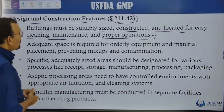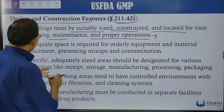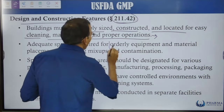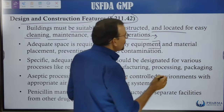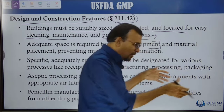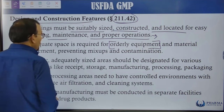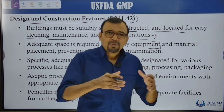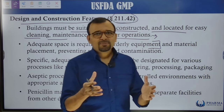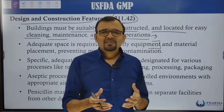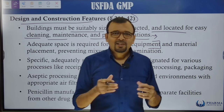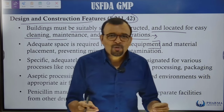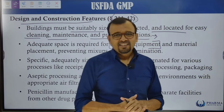Equipment should be arranged for unidirectional manufacturing flow. There must be places available for storing in-process materials — for example, storing blended material before and after blending, or storing bulk compressed tablets within the compression area. Adequate space inside each specific area is very important.